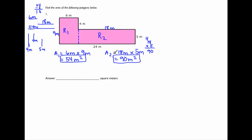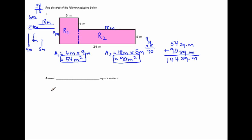The last step is to add up the areas of the two rectangles. We have 54 square meters plus 90 square meters. 54 plus 90 is 144. So we get a total area of 144 square meters.